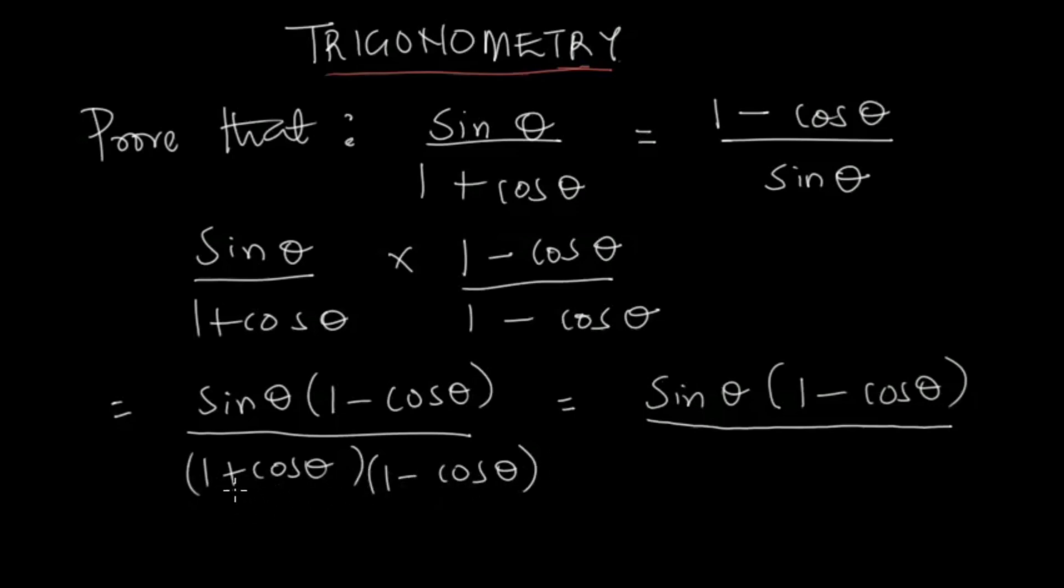Now this reminds us of the difference of two squares formula, which says that a² minus b² is a plus b, a minus b. So we take 1² minus b, which is cos θ, cos θ squared, which is going to be cos² θ.